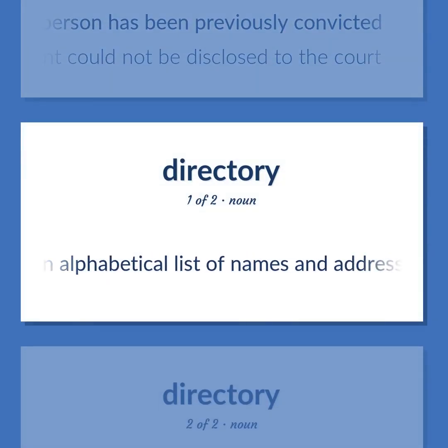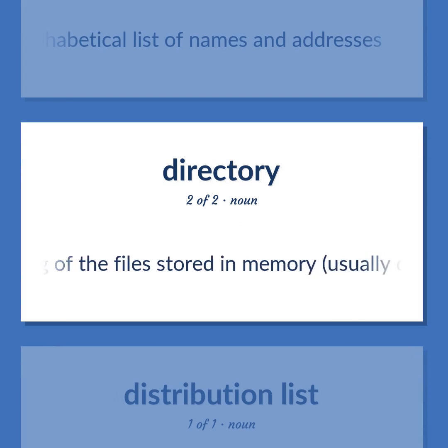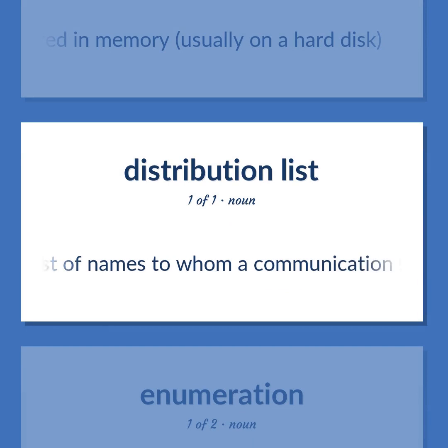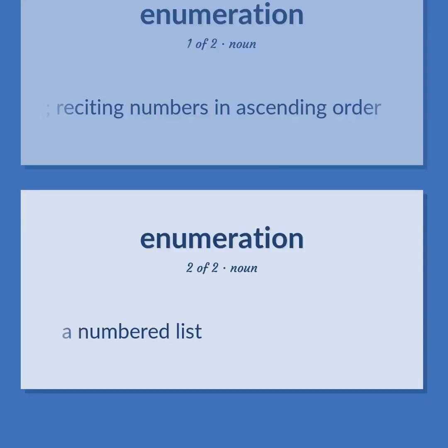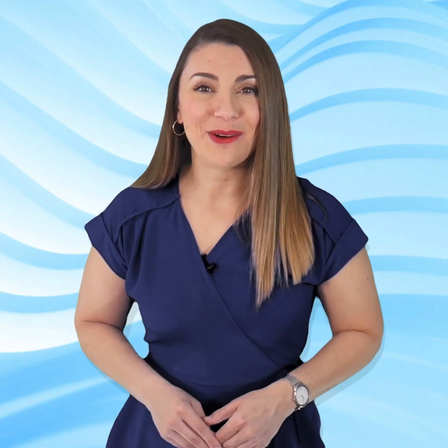Directory: An alphabetical list of names and addresses. Computer science: A listing of the files stored in memory, usually on a hard disk. Distribution list: A list of names to whom a communication should be sent. Enumeration: The act of counting; reciting numbers in ascending order. A numbered list.